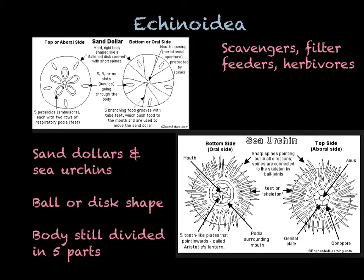Class Echinoidea includes sand dollars and sea urchins. They have a downward-facing mouth and tend to have a ball or disc shape. The important thing about these organisms is that they have a shell made out of calcium carbonate. They tend to be filter feeders or scavengers, and sea urchins are a very important herbivore.